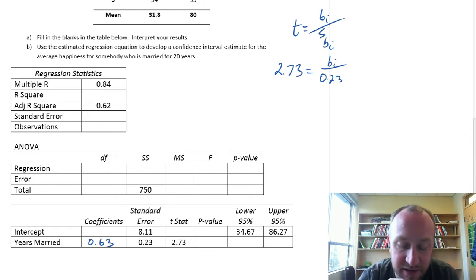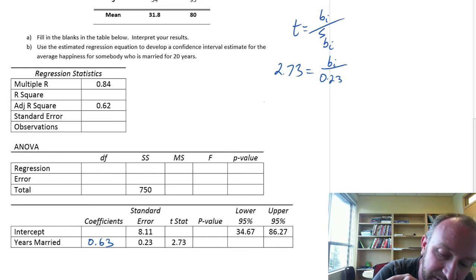Now, how can we do it for the intercept? We don't have the t statistic, we do have the standard error. We also have the confidence interval estimates.